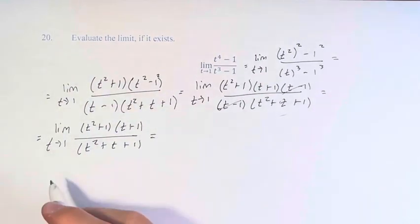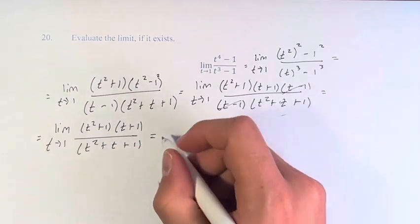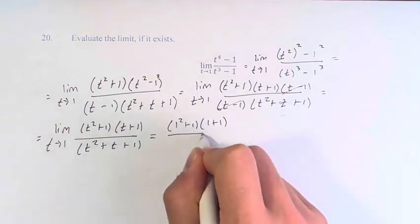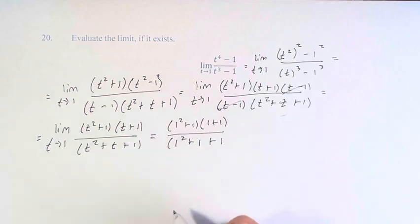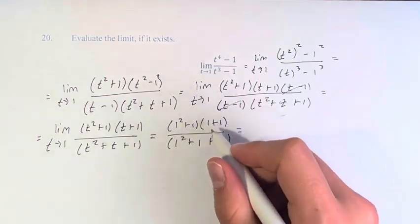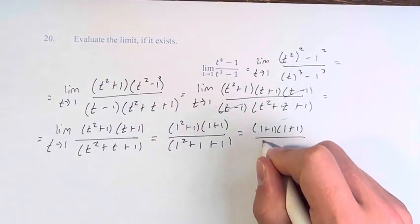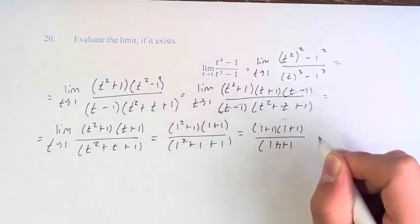And now we can plug in 1 into this fraction, and this will be 1 squared plus 1 times 1 plus 1 over 1 squared plus 1 plus 1. 1 squared is of course 1, so this is 1 plus 1 times 1 plus 1 over 1 plus 1 plus 1.